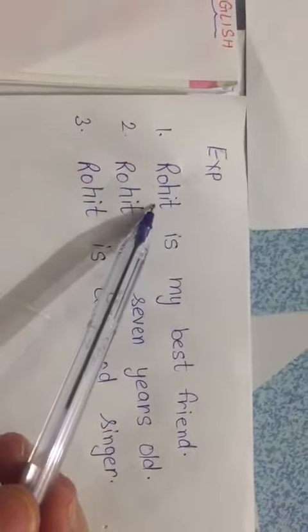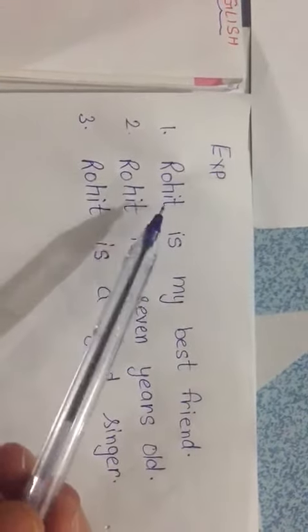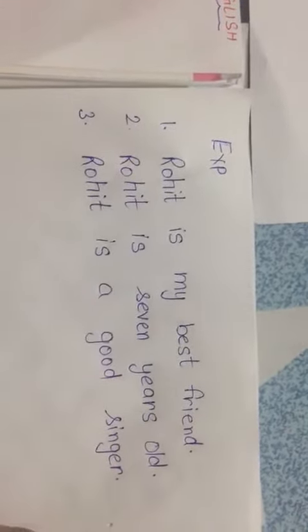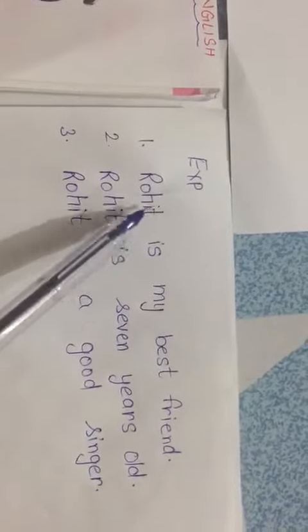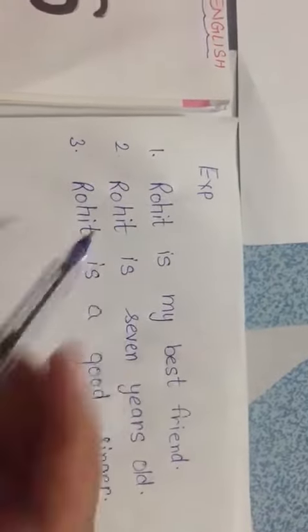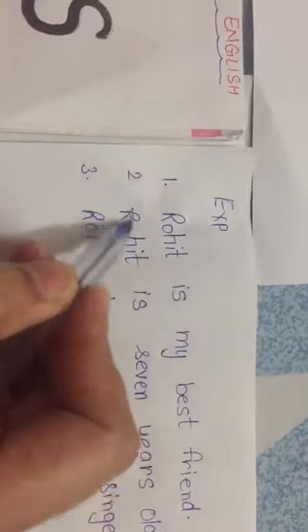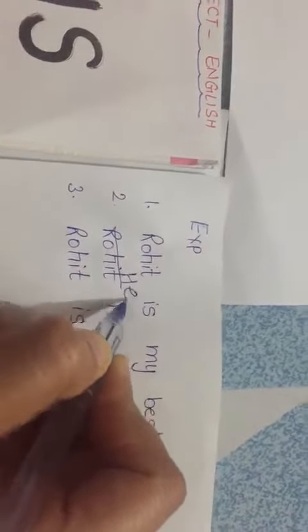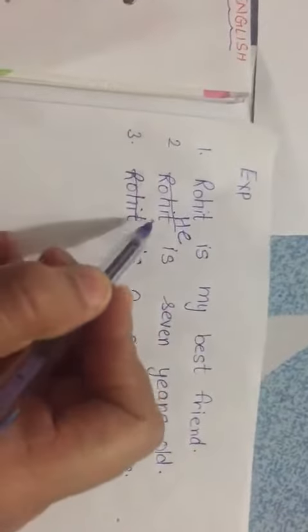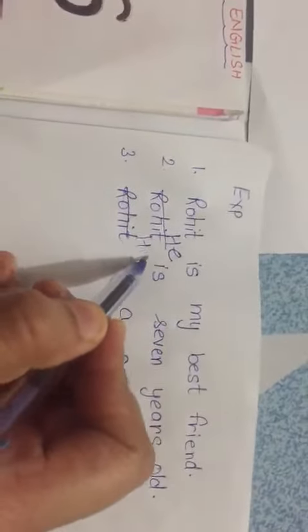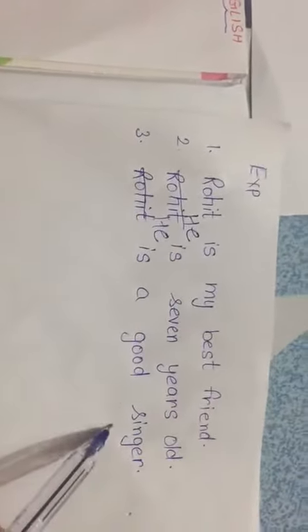So Rohit is a boy — we can use 'he' for him. So we can say: Rohit is my best friend. He is seven years old. He is a good singer.